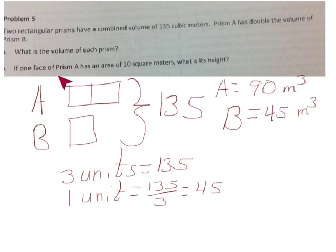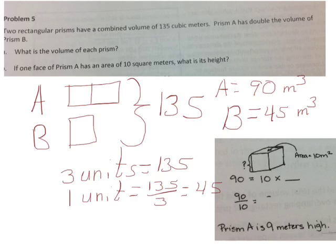Question B said, if one face of prism A has an area of 10 square meters, what is its height? We know that the area of one face is 10. We know the volume is 90. So we know that 10 times something has to equal 90, because length times width times height equals volume. Volume is 90. We have, let's say, the length times the width. We need to determine the height. So 90 would equal 10 times something. We have to do 90 divided by 10 to find that missing dimension. 90 divided by 10 would be 9, so prism A is 9 meters high.